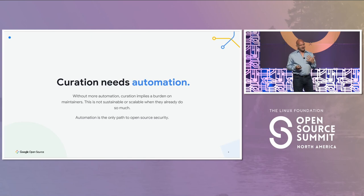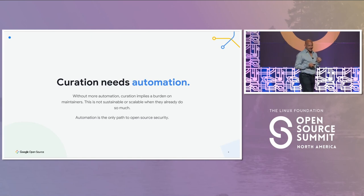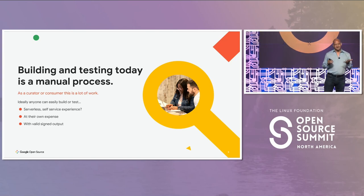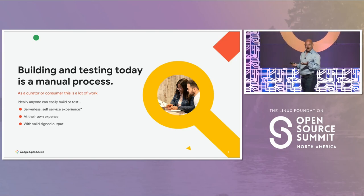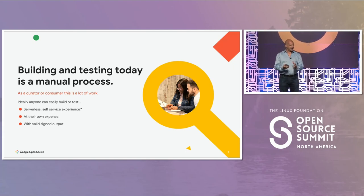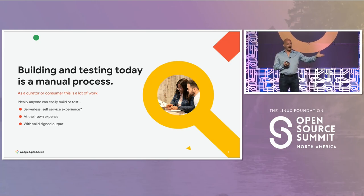I feel like automation is the only path to get to a secure supply chain where consumers can understand what they got and how it was built — without saying 'maintainers do more.' My message is: let's get automation working so maintainers do less and we can deliver more in an automated way. It starts with something simple, which is even the way you build something today tends to be manual. And I don't mean that you haven't figured out how to build your stuff in an automated way on your laptop.